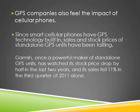GPS companies are also feeling the impact of cellular phones. Since smart cellular phones have GPS technology built in, along with simple apps that handle GPS functions, the sales and stock prices of stand-alone GPS units have been falling. For example, Garmin, once a powerful maker of stand-alone units, had its sales fall 11% in the third quarter of 2011 alone, and its stock price dropped in half in the last two years. What many of these companies are attempting to do are evolutionary steps — producing applications for cell phones and promoting their own GPS functions and mapping systems as superior to the built-in. However, as evolutionary steps, this will likely make little difference against the disruptive technology.